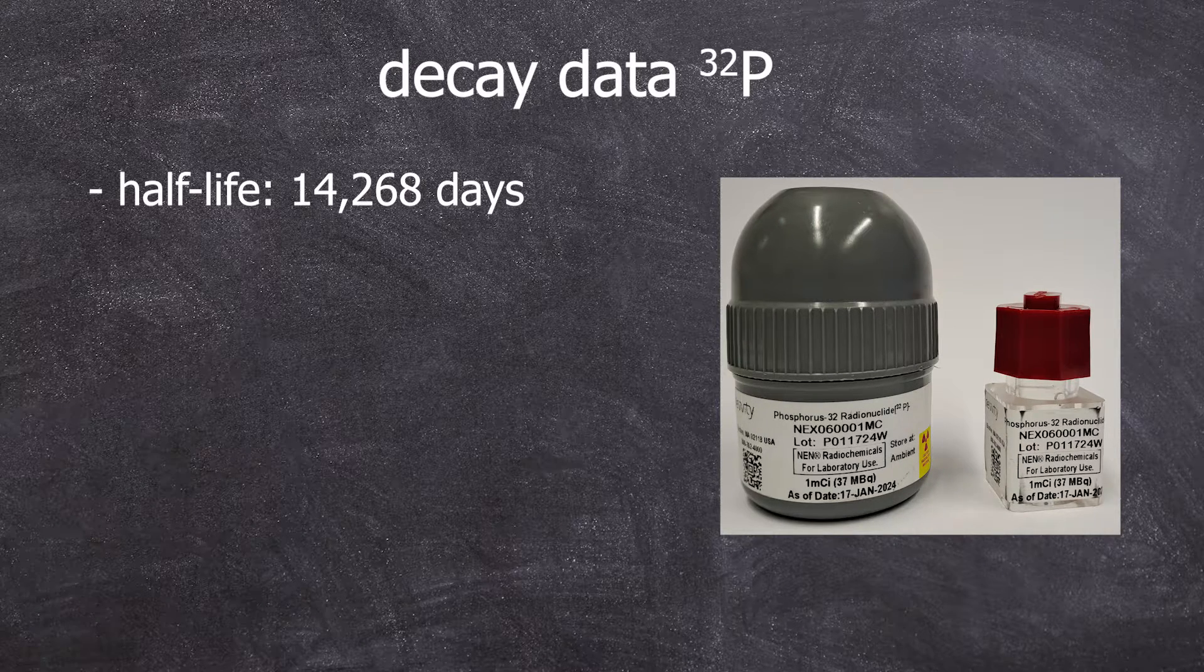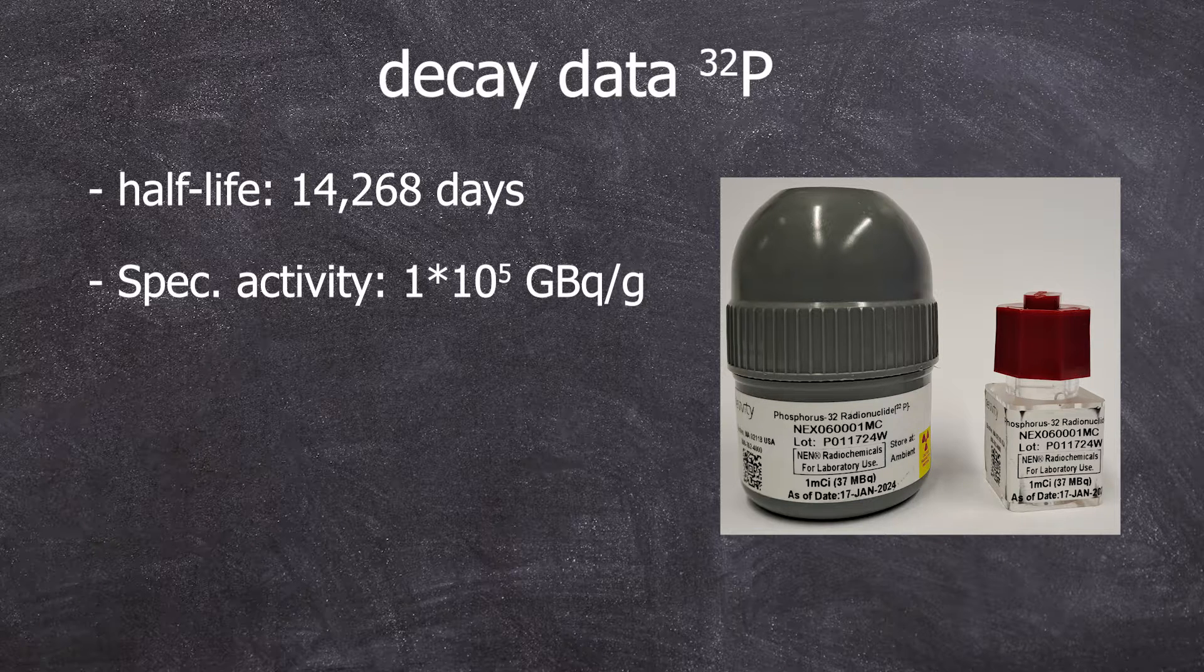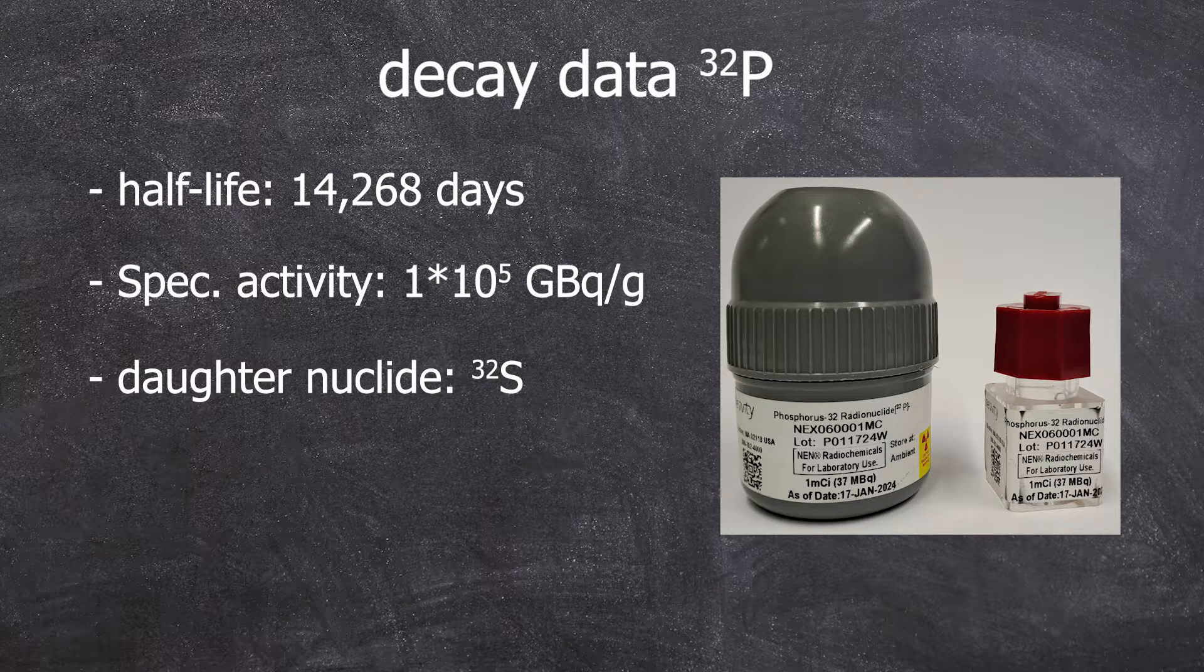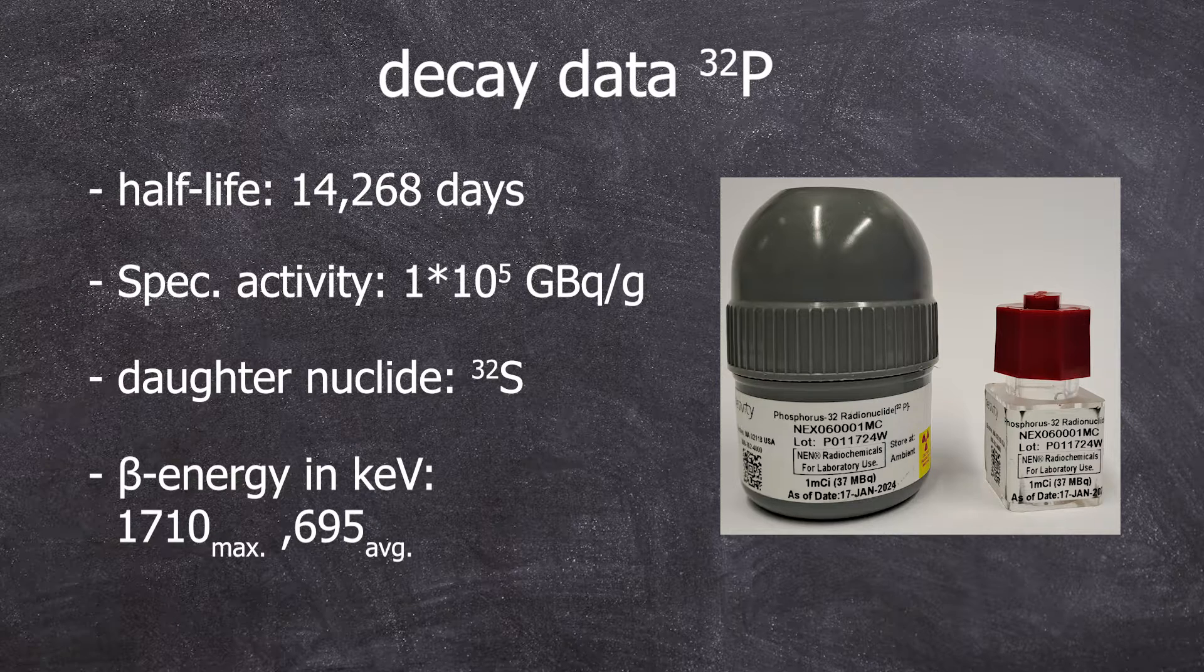Half-life 14.268 days. Specific activity 1 times 10 to the power of 5 GBq per gram. It decays into stable Sulfur 32 with a relatively high beta energy of 1710 keV maximum and 695 keV on average.